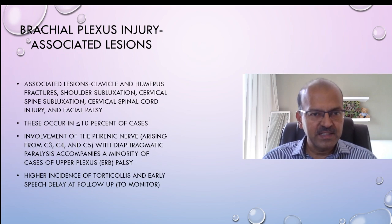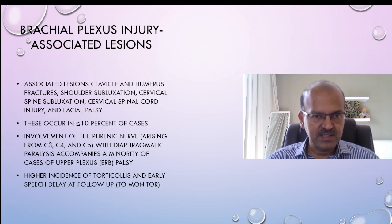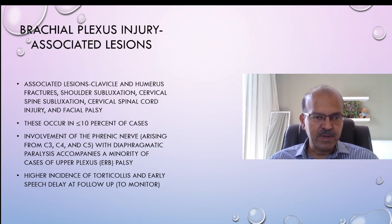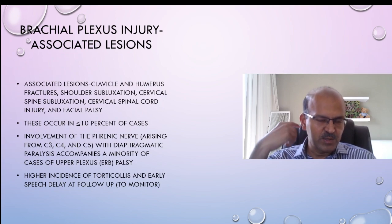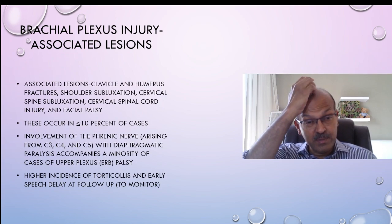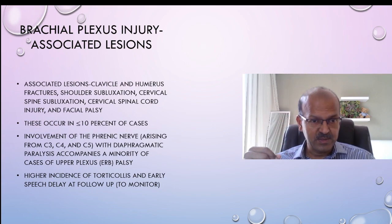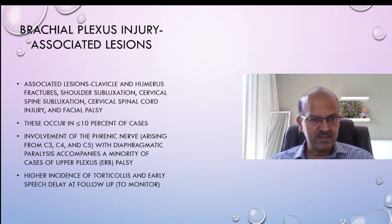There may be associated lesions like clavicle and humerus fractures, so we most commonly do X-ray to rule out fractures. We may have shoulder subluxation, which is not that common. Cervical spine subluxation is very serious but thankfully not seen often. Spinal cord injury — in which case there will be quadriplegia — is quite poor prognosis. Facial palsy is possible as well. These associated findings happen in less than 10 percent of the cases.